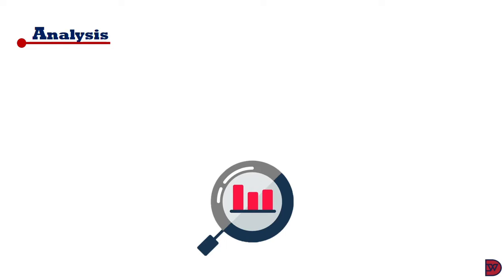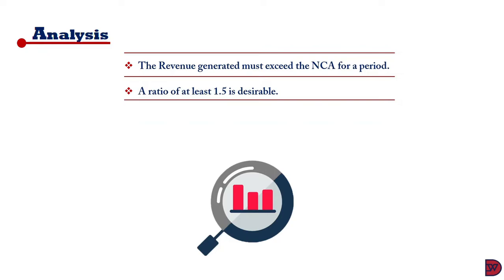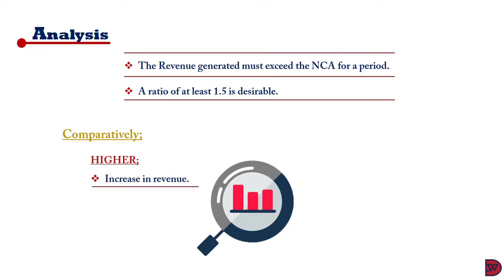When analyzing the non-current asset turnover ratio, the revenue generated must exceed the non-current asset value for the period. A desirable rate should be 1.5 and above. Comparatively, when measuring a business's performance against industry players, a higher rate can result from an increase in revenue or a reduction in non-current assets — and where there is a reduction, it must be investigated whether it is deliberate just to arrive at a higher ratio.